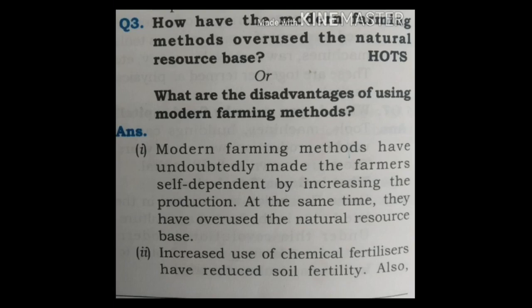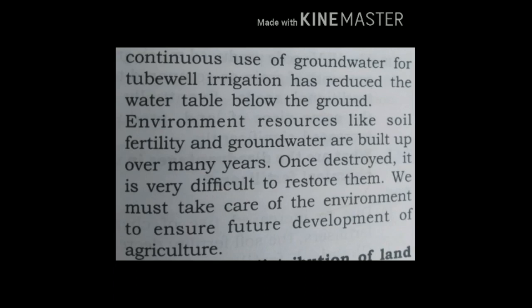Question 3: How have the modern farming methods overused the natural resource base? Modern farming methods have undoubtedly made farmers self-dependent by increasing production. At the same time, they have overused the natural resource base. Increased use of chemical fertilizers has reduced soil fertility. Also, continuous use of groundwater for tube well irrigation has reduced the water table below the ground. Environmental resources like soil fertility and groundwater are built up over many years — once destroyed, it is very difficult to restore them. We must take care of the environment to ensure future development of agriculture.